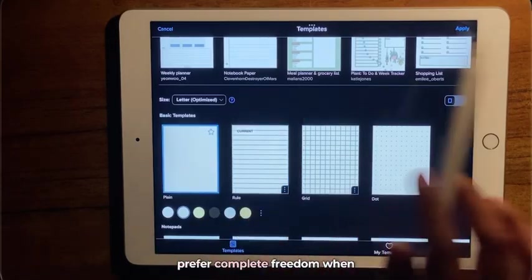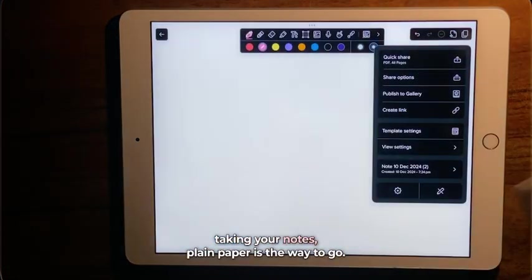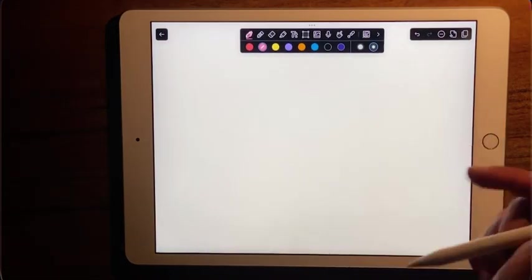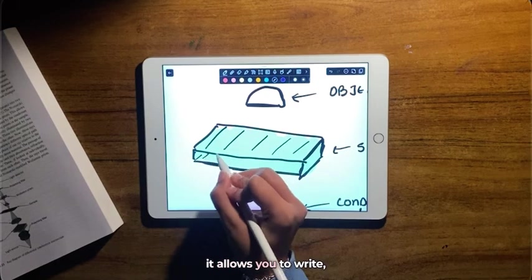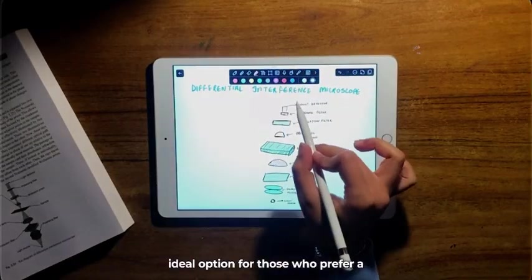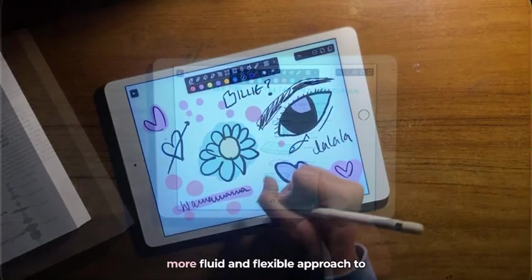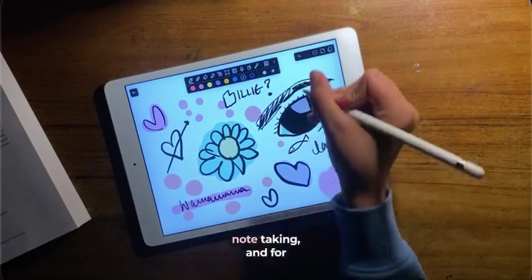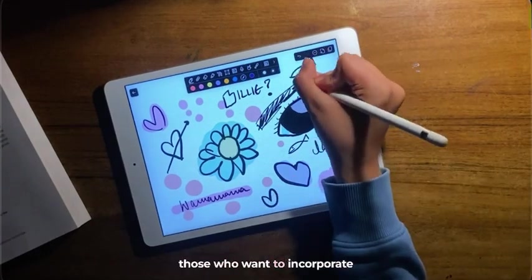Now, if you prefer complete freedom when taking your notes, plain paper is the way to go. With no lines or grids, it allows you to write, sketch, and organize your notes however you want. It's the ideal option for those who prefer a more fluid and flexible approach to note-taking, and for those who want to incorporate a few sketches and doodles in boring lectures.